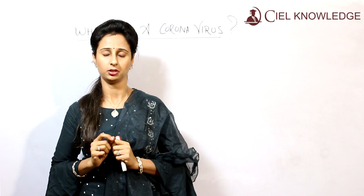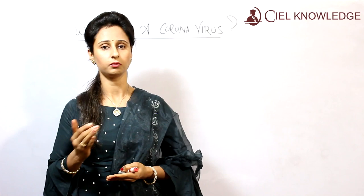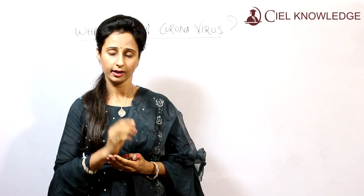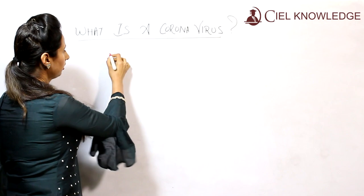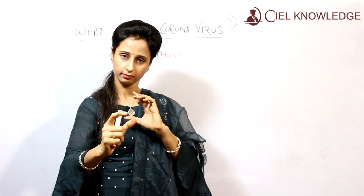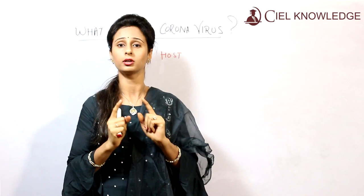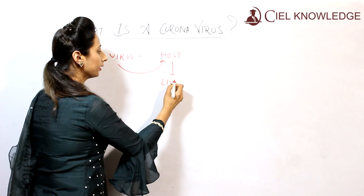What is a virus? It is a small infectious agent that replicates within a living organism. That living organism can be an animal, a plant, a microorganism — any living organism. So basically, a virus is an infectious agent. A virus needs a host. Whenever a virus is outside the cell, it is non-living and not doing any work. But the moment it enters a cell, it becomes a living organism. So basically, a virus requires a host for its living.